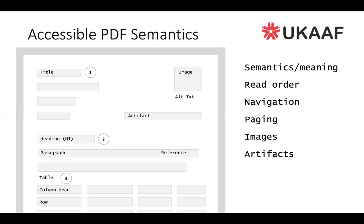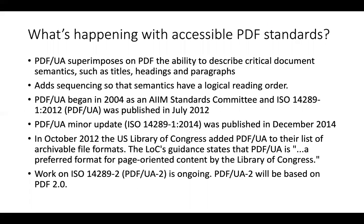PDF/UA superimposes on PDF the ability to describe critical document semantics in similar ways to HTML — things such as titles, headings, paragraphs and the ability to sequence these so that they have a logical reading order. The PDF/UA project began in 2004 as an AIIM Standards Committee, and ISO 14289 published in 2012 was the standard; a minor update was published in 2014. In October 2012, the US Library of Congress added PDF/UA to their list of archivable file formats, stating that PDF/UA is a preferred format for page-oriented content. Work on ISO 14289-2, or PDF/UA 2, is ongoing and is based on the PDF 2.0 standards.